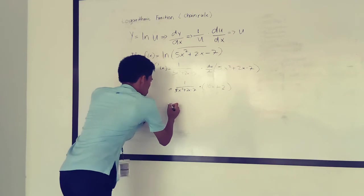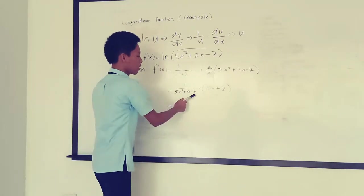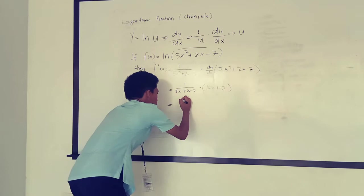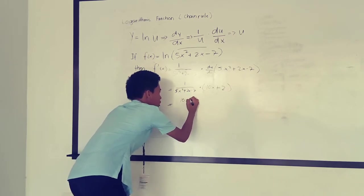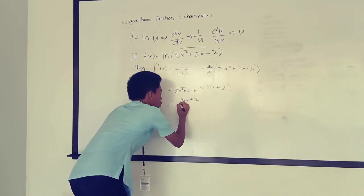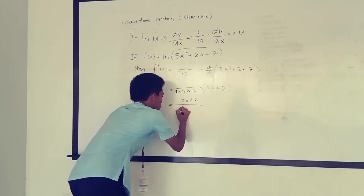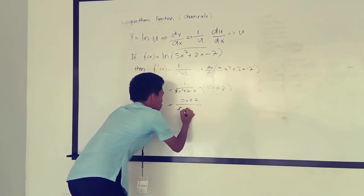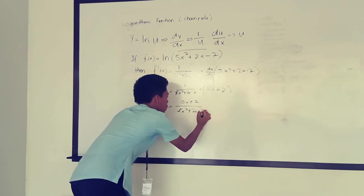After that, we will simplify this part. So, 10x + 2 over 5x² + 2x - 3.